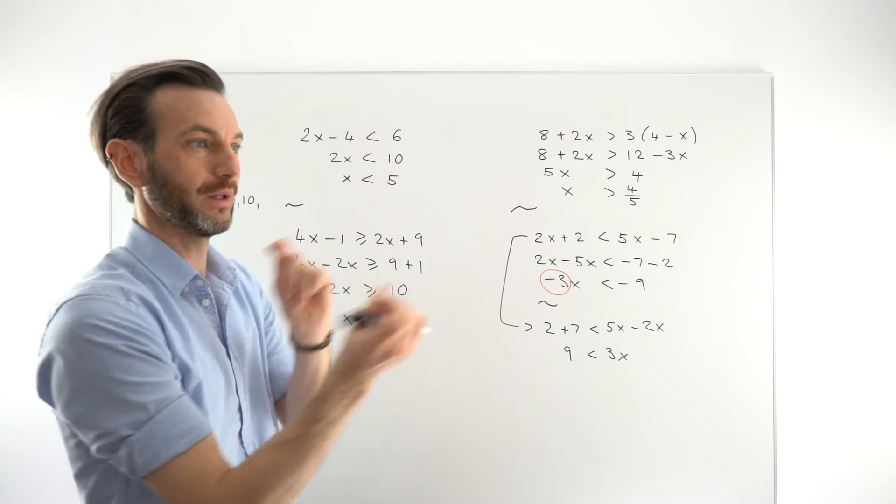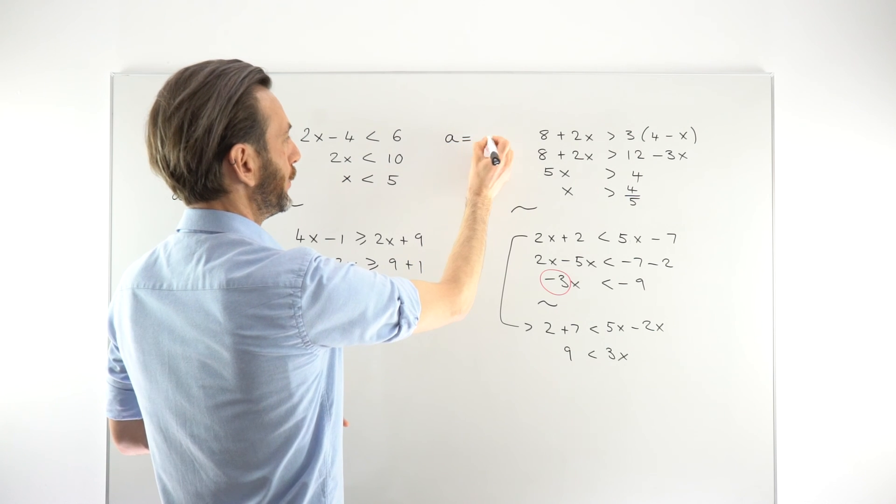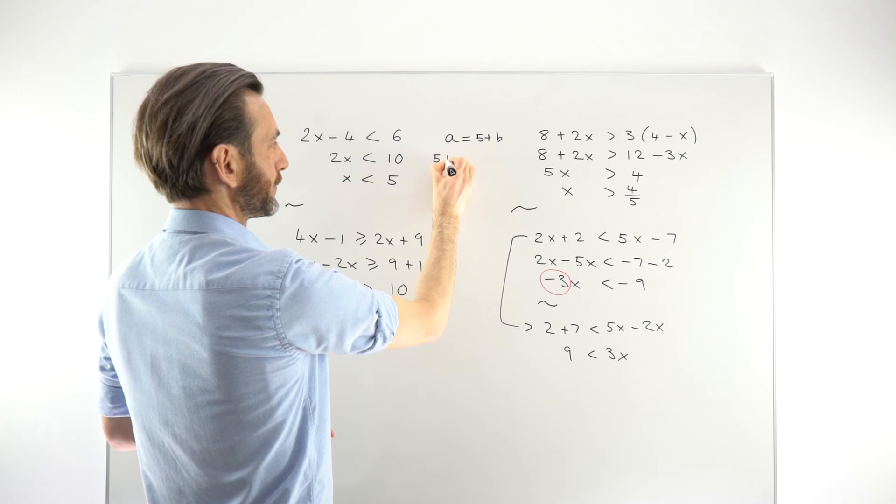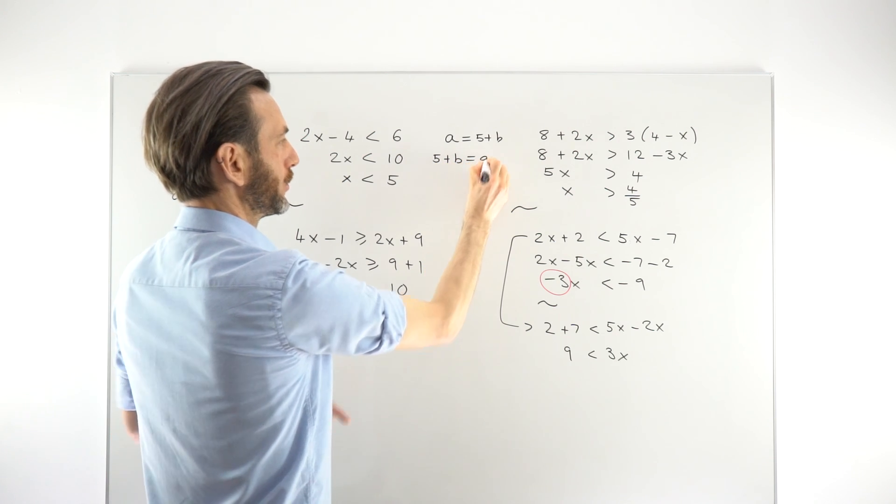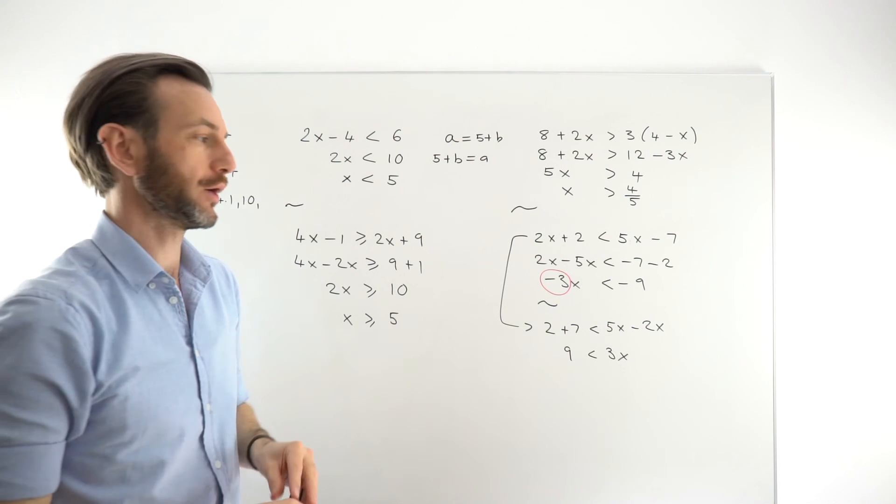So it still raises a question of how do we deal with that. If it's an equation, you can just spin them around. If you had the equation a equals 5 plus b, you can rewrite that as 5 plus b equals a. You can just spin that equation around. Can you spin those around? That's the question.